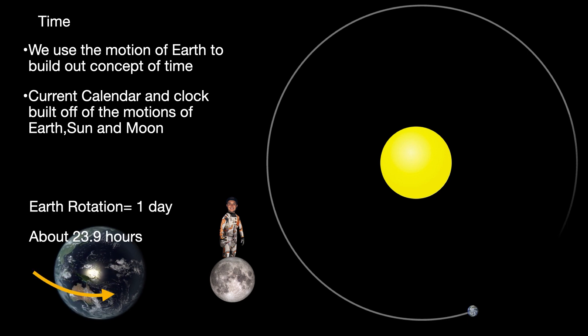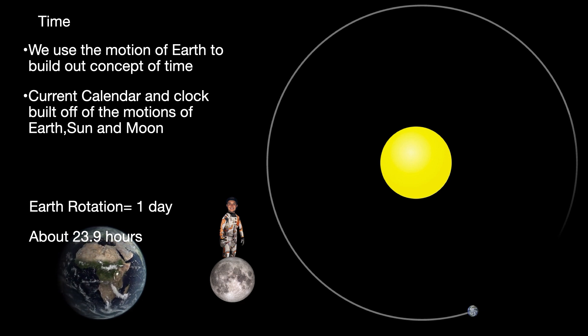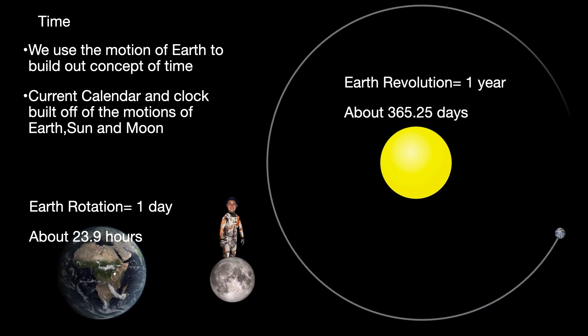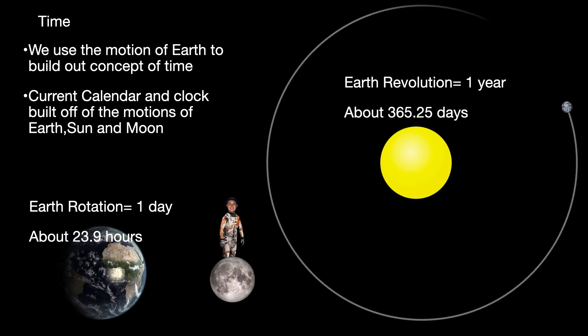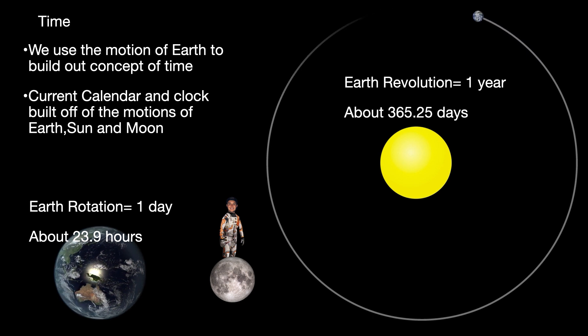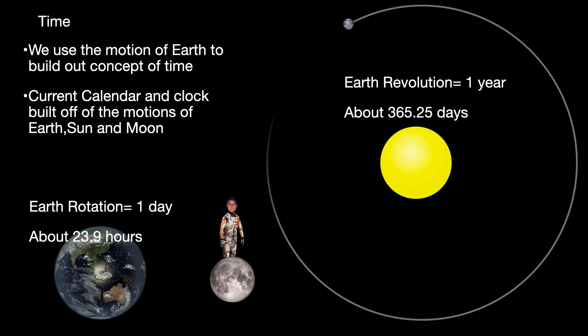In terms of rotation, that is what we define as a day on Earth. If you were standing at the North Pole looking straight down, it would take about 23.9 hours for Earth to make one rotation or spin one time. If you were looking at the solar system from the top down, you would see that Earth revolves around the sun every 365.25 days, which we've defined as a year.